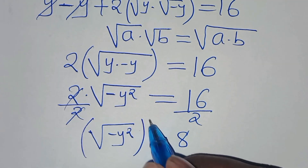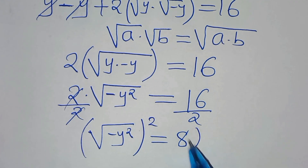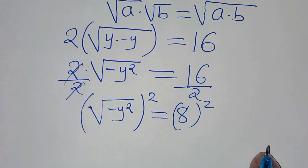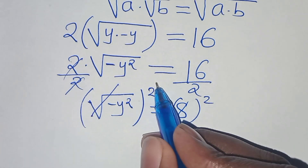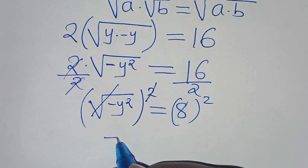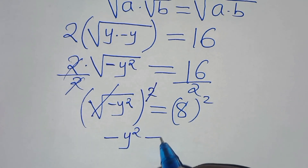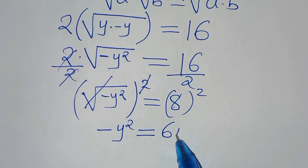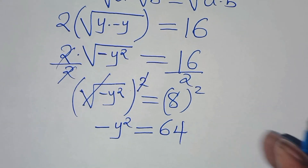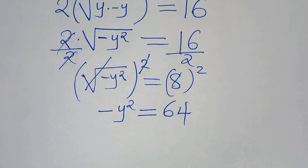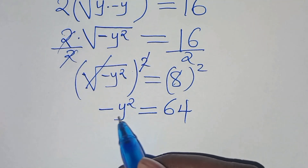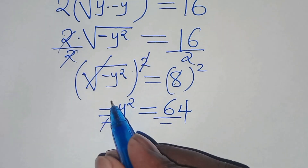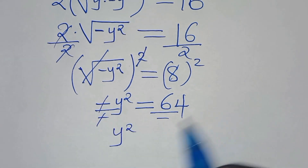The next step is to square both sides to eliminate the square root sign. This gives minus y squared equals 8 squared, which equals 64. We then divide both sides by minus 1, so that we have y squared.